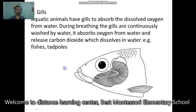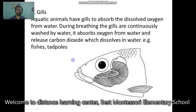The third organ is gills. Looking at the picture you can tell — aquatic animals have gills to absorb the dissolved oxygen from water. These gills are washed by the water, and during this washing, the gills absorb oxygen from the water.